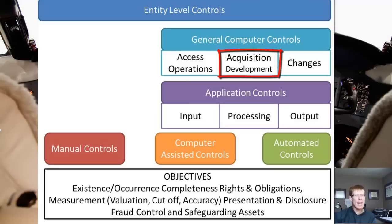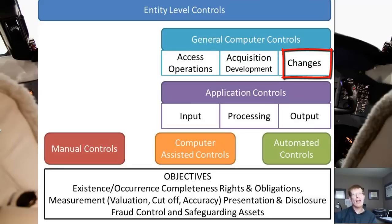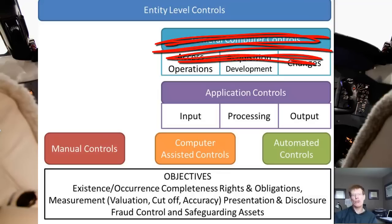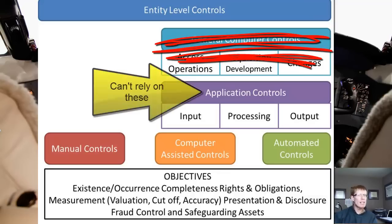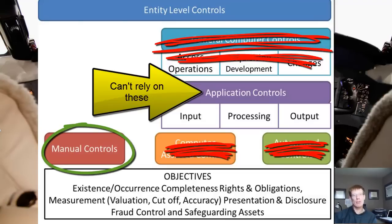Any time the IT system changes, for whatever reason, controls must be in place to ensure that the data is transitioned accurately to the new system, and that the new system contains all of the necessary controls that the old system had. Thirdly, we want to ensure that there are adequate operational controls and support. These controls cover such things as backup and recovery procedures, physical and logical access — we don't want unauthorized users gaining access to our systems. If general computer controls are not effective, then it's unlikely we can place much reliance on the application controls, leaving us with only those manual controls left to meet the company's objectives.